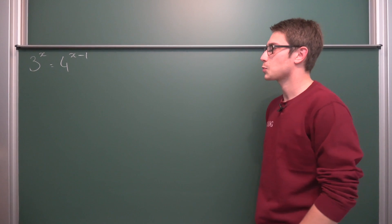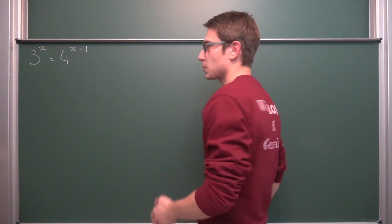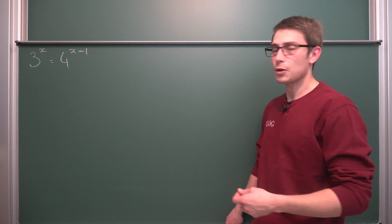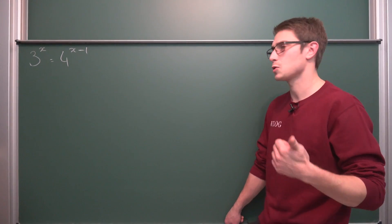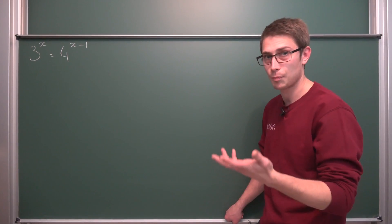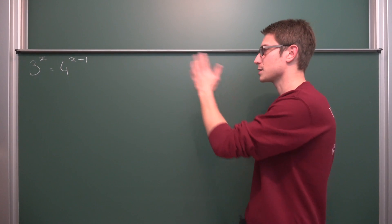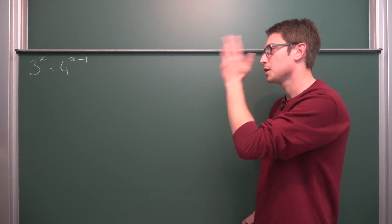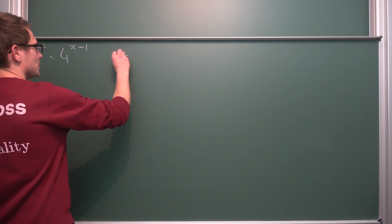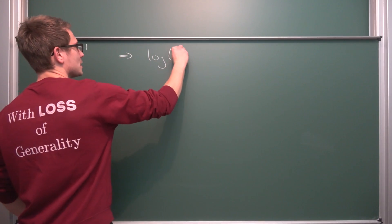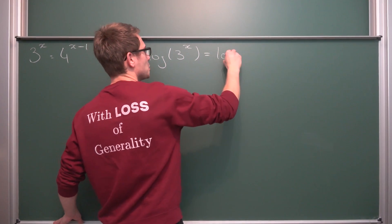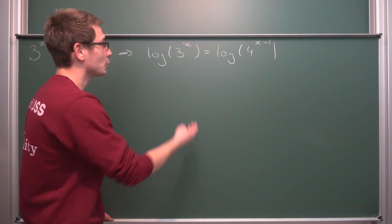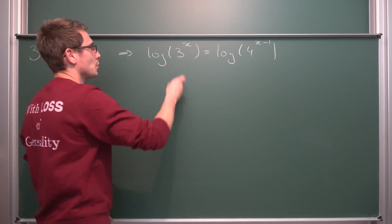So this right here is an exponential equation, but the thing is we have different bases. How would you solve something like this? Well, there are actually various different ways you could do so, and I'm going to present my most favorite method first — the most intuitive one — then another one using the change of base formula, and at the very end we are going to generalize this work. The first thing we are going to do is take the natural log on both sides. I'm going to denote the natural log as just log. So we take the natural log of 3 to the x.